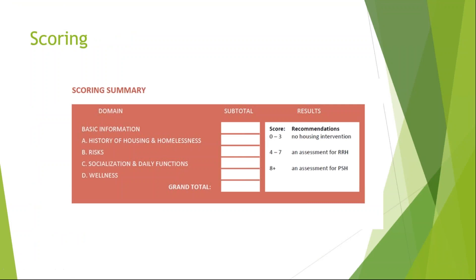For scoring, you add up the grand total and the recommendation is as follows: eight and higher is for permanent supportive housing; four through seven is an assessment for rapid rehousing; and zero through three is no intensive housing intervention — though I would say not no housing intervention, but maybe just a less intensive one. In our program we've helped a lot of people who scored zeros or threes. I actually had someone who scored a zero, but if she had answered the VI-SPDAT questions honestly she probably would have gotten a higher score. If I had just gone off of the score, I wouldn't have done anything with her — but she definitely needed our help.